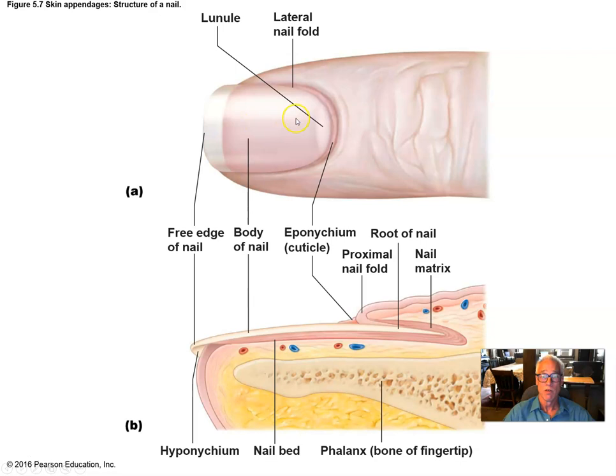Here you can see the very familiar appearance of the nail on a digit. Here is the nail matrix where the cells are growing and producing the structure which is then forced distally as it grows. The stem cells and transit amplifying cells are here in the nail matrix.